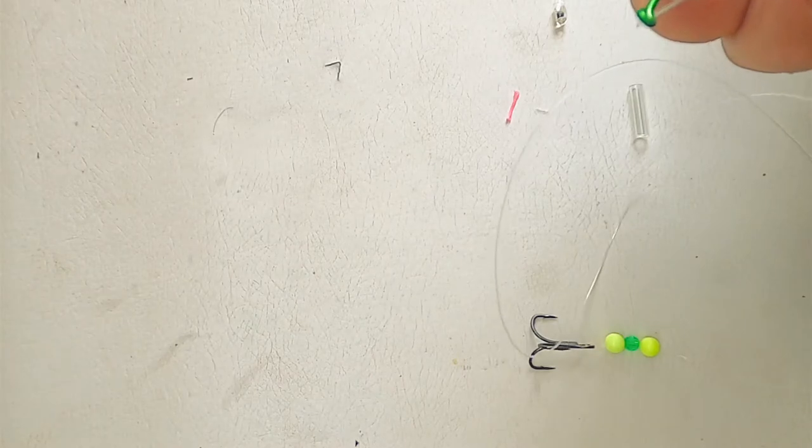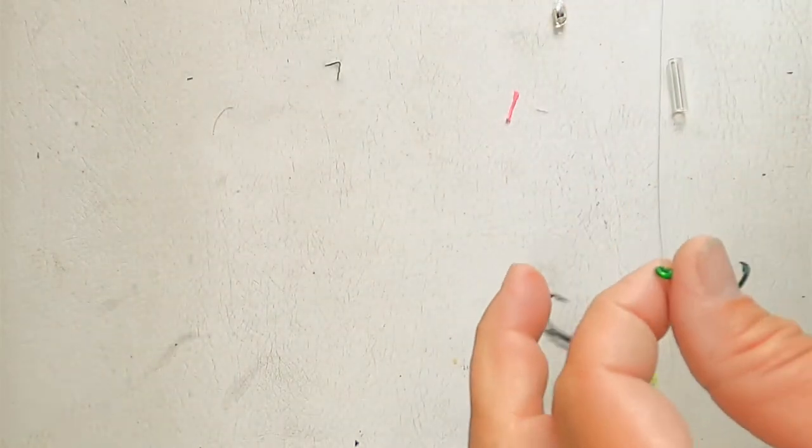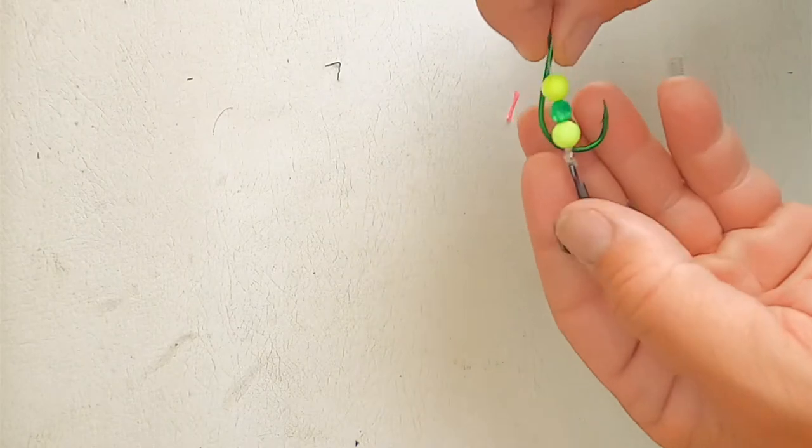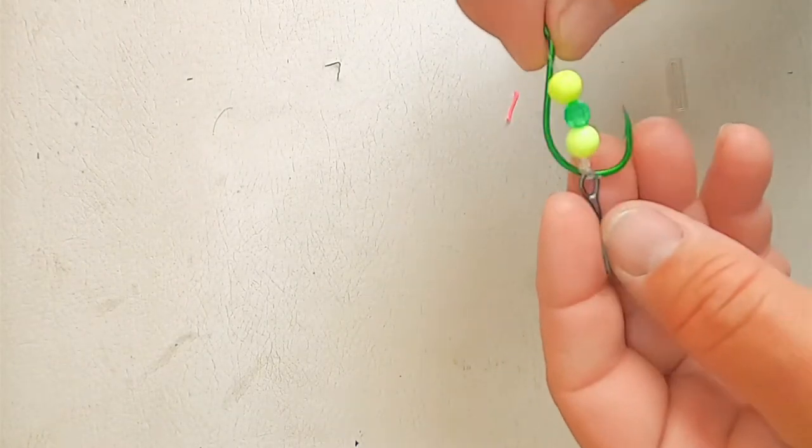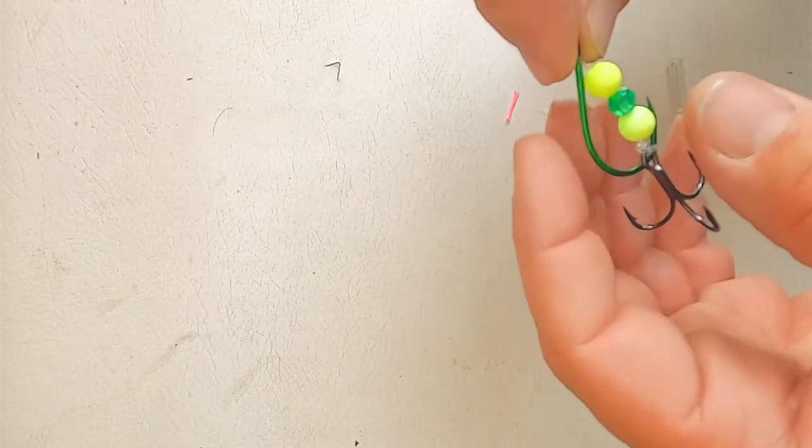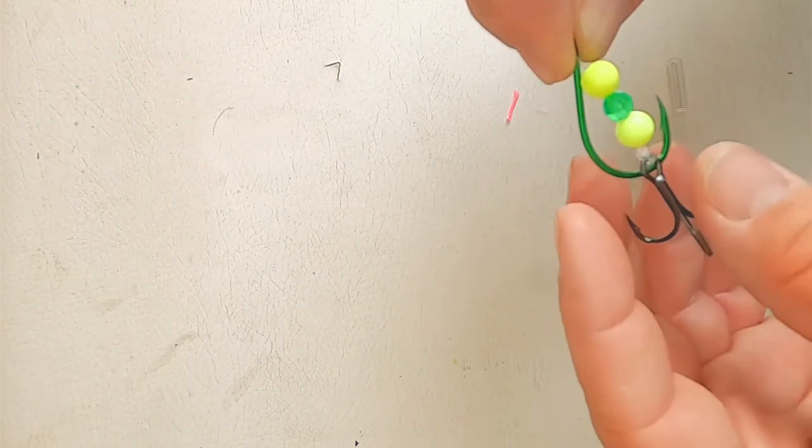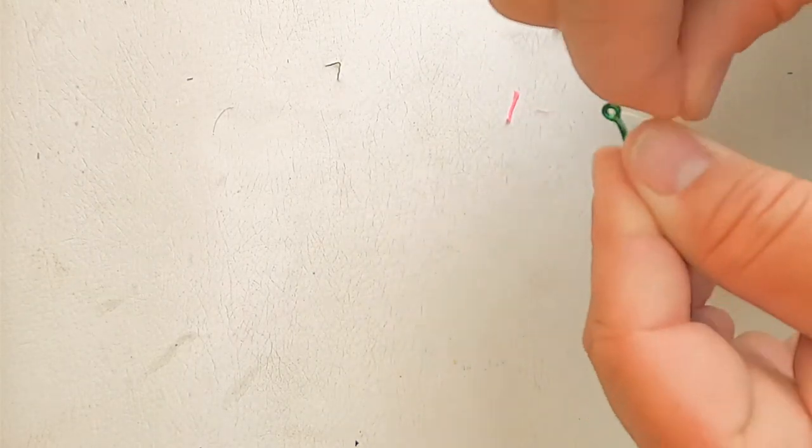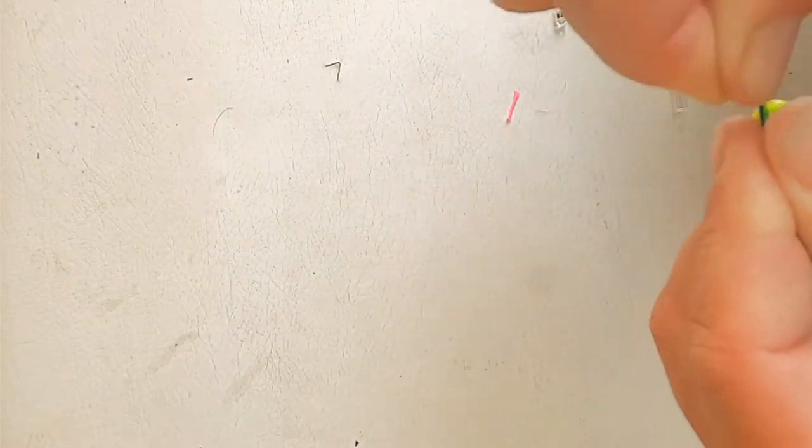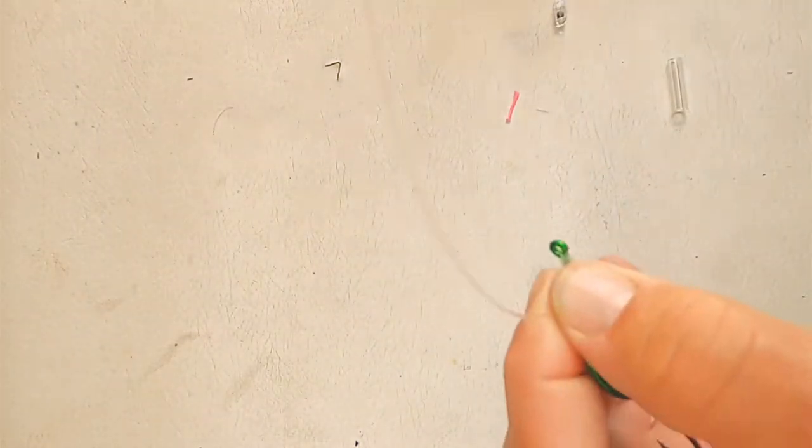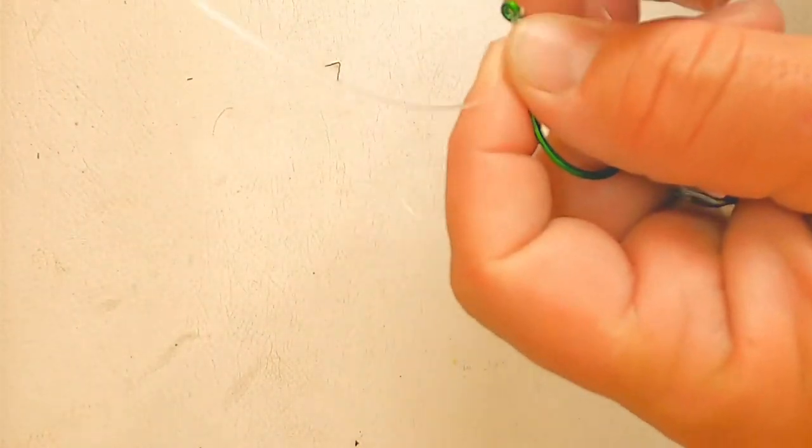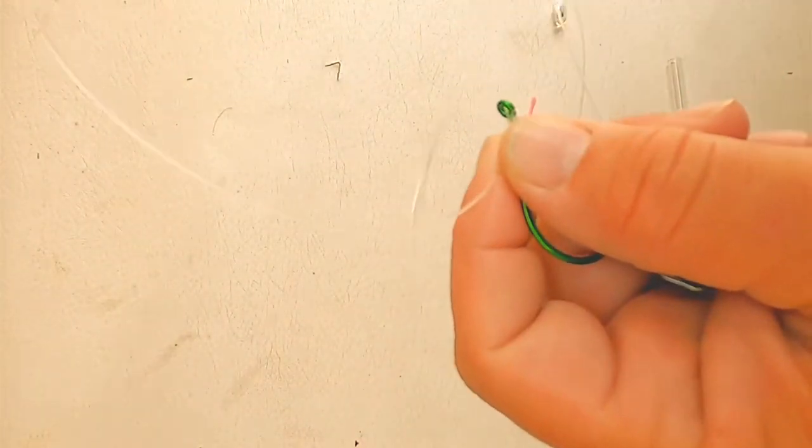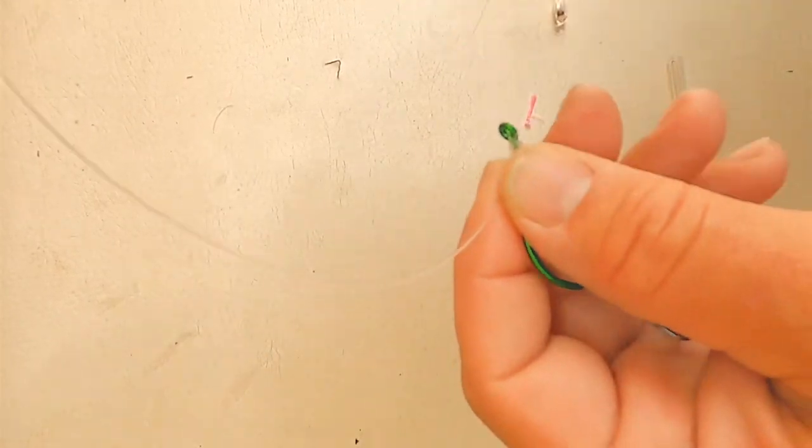So now we're feeding on our single hook. The hooks we're using today, VMC short point 7475 4X for your treble and the Gamakatsu 5-aught, 5-aught green octopus hook.